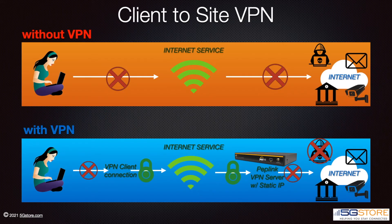Client-to-site VPN connections include L2TP with IPSec, PPTP, and OpenVPN. As an example, let's say we're at the local coffee shop, connected to their free Wi-Fi with our laptop. If we want to do some online banking securely, we can connect to the Peplink router at our home using any of these VPN connections. However, it's important to note that this is only possible if the internet connection at your home has a publicly routable IP address, such as a static IP.